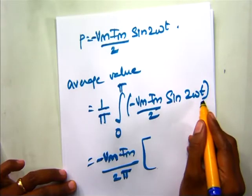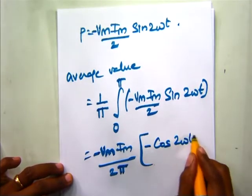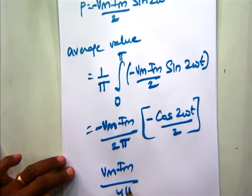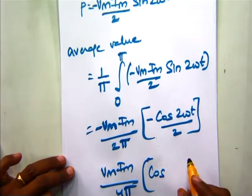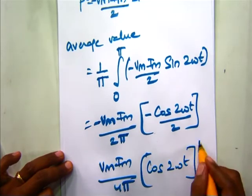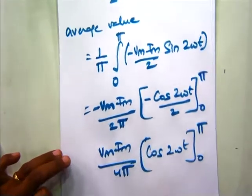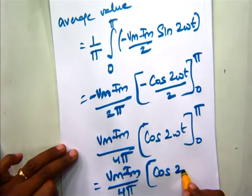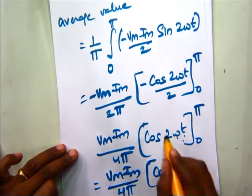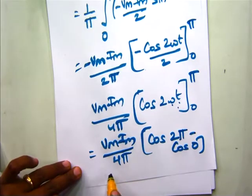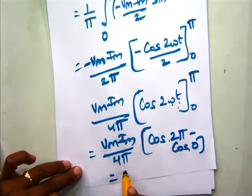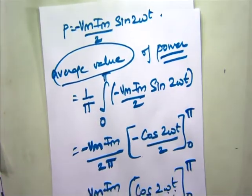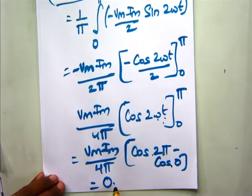The integral of sin 2 omega t is minus cos 2 omega t divided by 2. This becomes Vm Im by 4 pi into cos of 2 omega t, with limits from 0 to pi. Substituting: cos of 2 pi equals 1 and cos of 0 equals 1, so this becomes 1 minus 1 which is 0. Therefore, the average value of the power consumed by a pure inductor is 0.